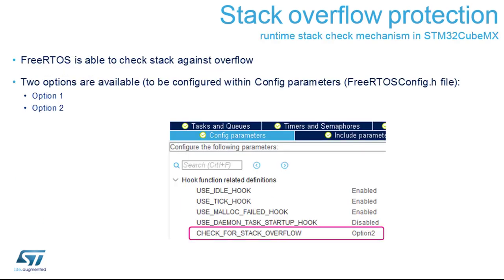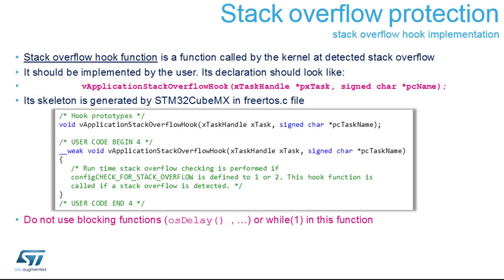Check for stack overflow should be enabled with option one or option two. When triggered, it provides the application stack overflow hook, which also signals which task and task name caused the overflow. Using those two parameters you can print the information and know which task needs its stack size extended or optimized. My suggestion is to log such an event including the task name, then restart or freeze the application.